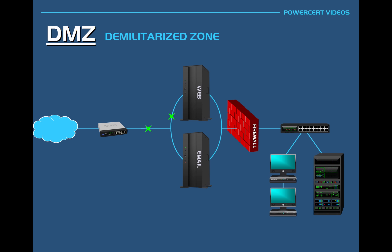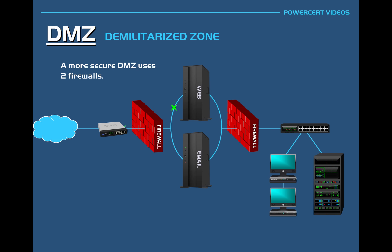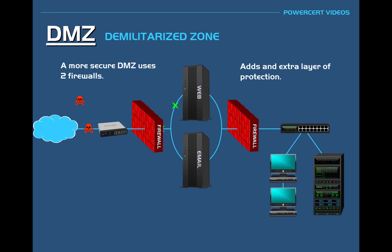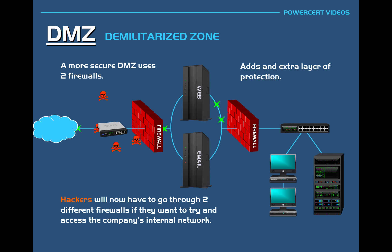This DMZ setup only uses one firewall, but a more secure DMZ will use two firewalls. An extra firewall is added in front of the DMZ. This second firewall adds an extra layer of protection to ensure that only legitimate traffic can access the DMZ. It also makes it much harder for hackers to penetrate the company's internal network, because they would have to go through two different firewalls.